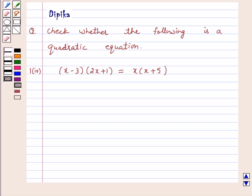Let's start the solution. Our given equation is (x - 3)(2x + 1) = x(x + 5).